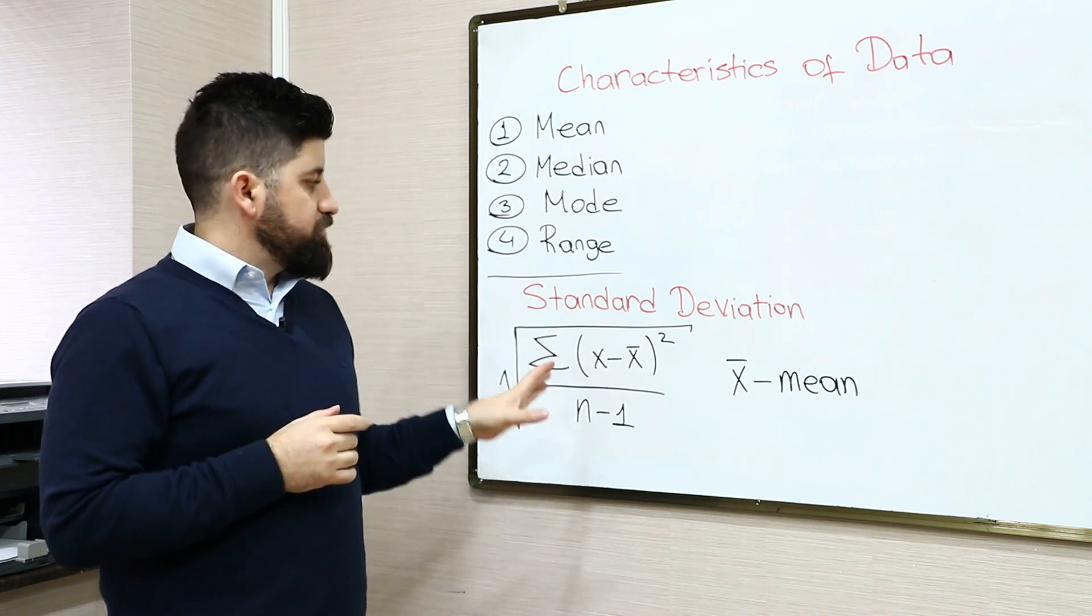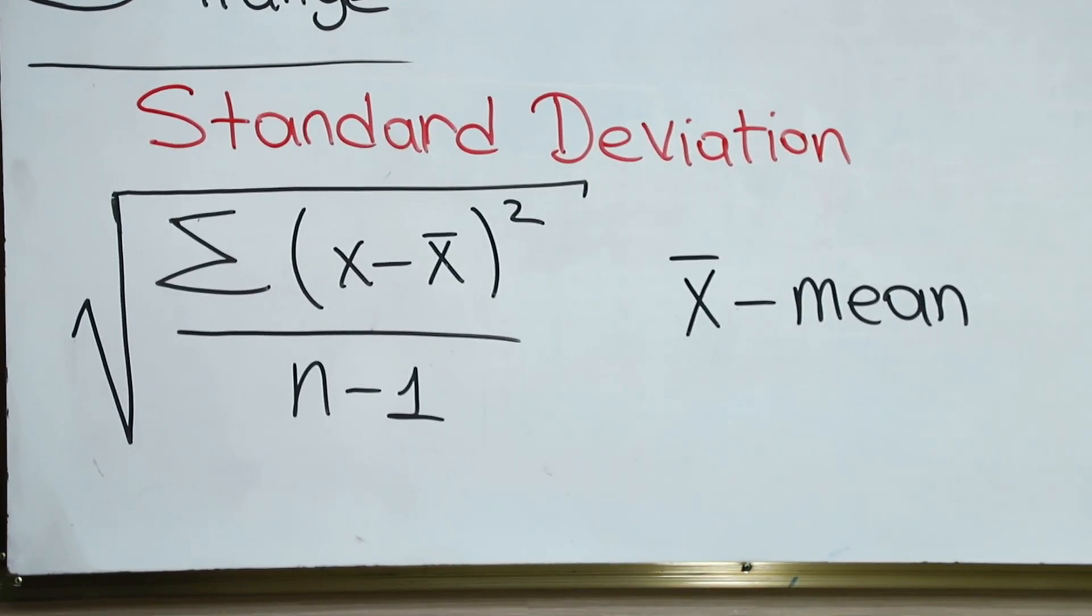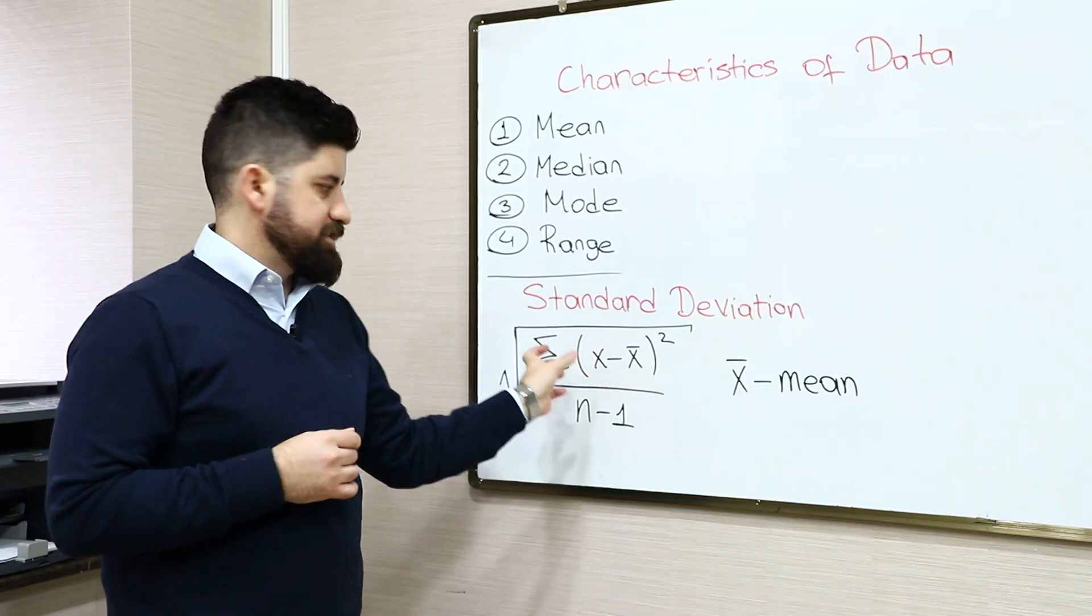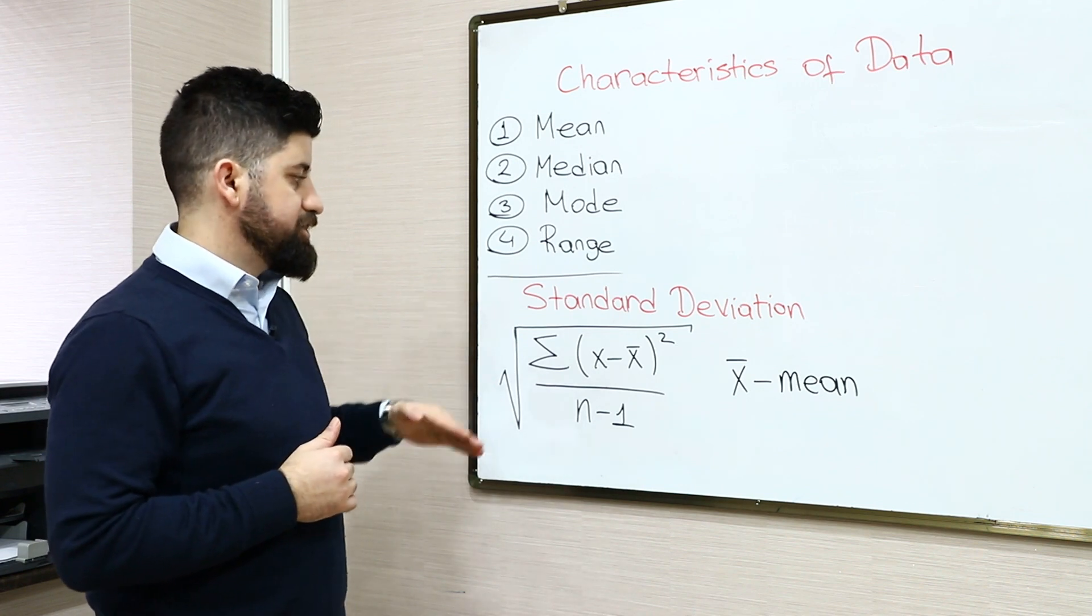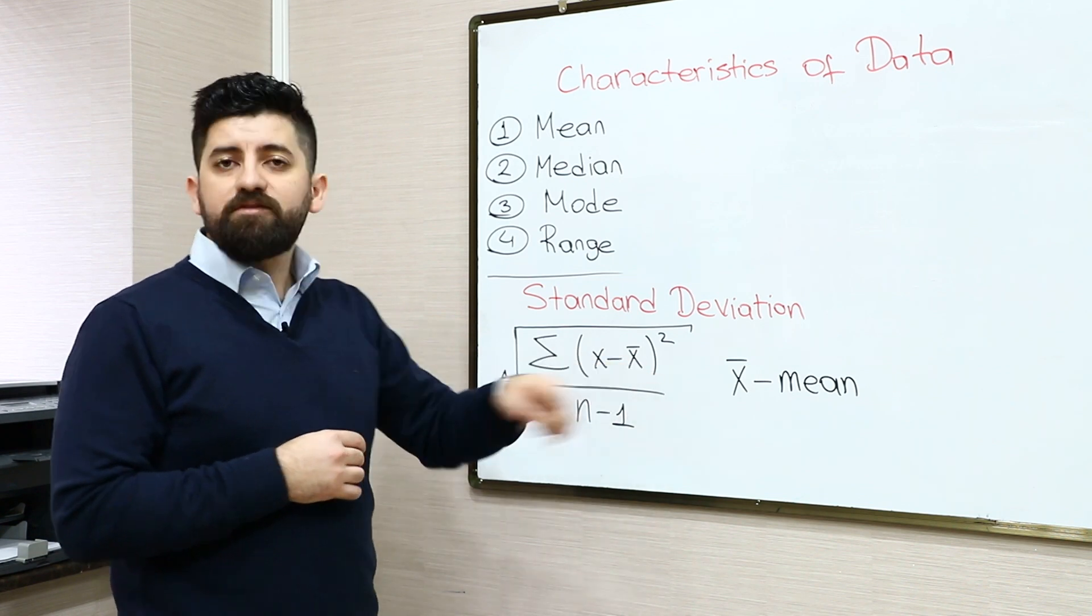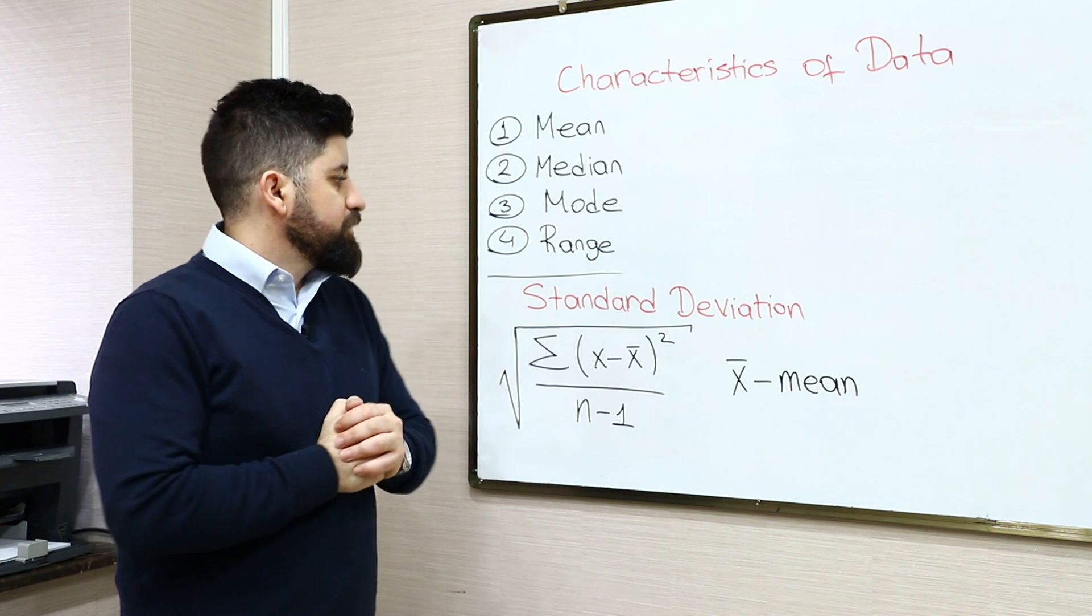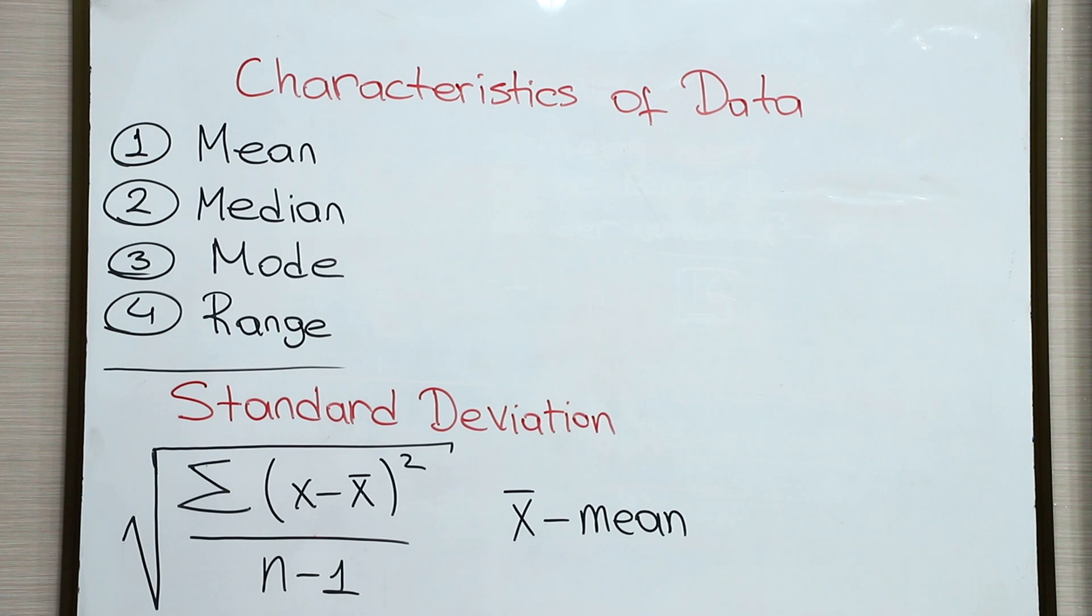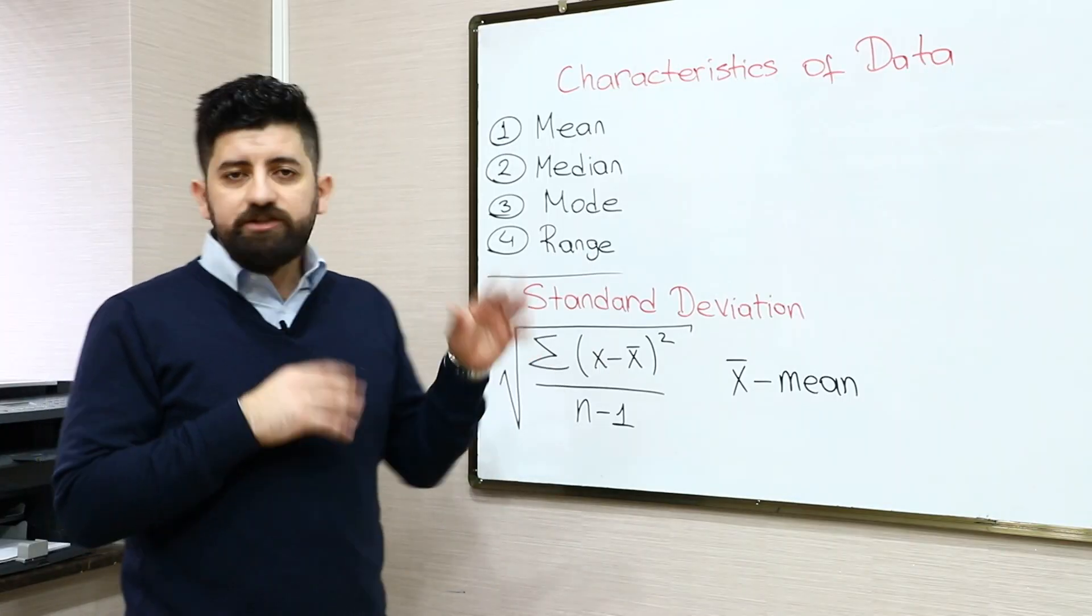I would like you to pay attention to this point: when we have smaller differences with the mean, we will have smaller standard deviation, and when we have greatest difference between number and mean, we will have higher standard deviation, which means that in that case the numbers are more spread out. Now let's translate the knowledge into practice.